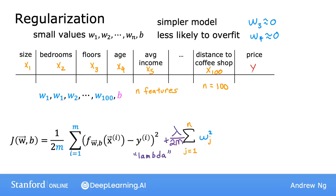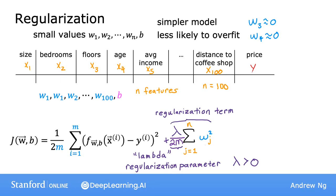The value lambda here is the Greek letter lambda and is called the regularization parameter. Similar to picking a learning rate alpha, you now also have to choose a value for lambda. By convention, instead of using lambda times the sum of wj squared directly, we divide lambda by 2m so that both the mean squared error term and the regularization term are scaled by 1 over 2m. This makes it easier to choose a good value for lambda, and in particular, the same value of lambda is more likely to keep working even if your training set size m grows.